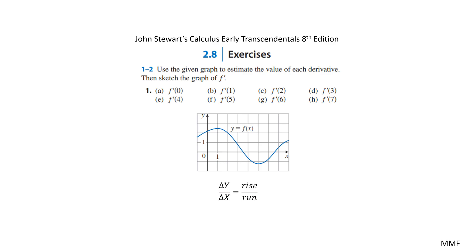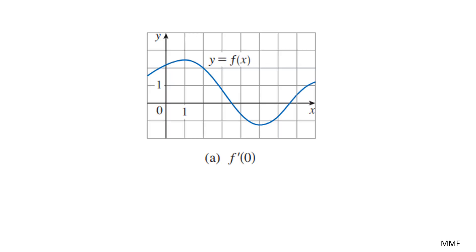For this, we're going to use delta y over delta x, or rise over run. If we look at this function, we'll start with the first one where we're trying to find the rate of change at 0.